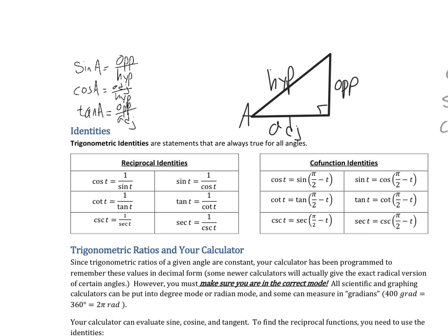We've also defined our three co-functions: cosecant, secant, and cotangent. They're just the reciprocal of sine, cosine, and tangent. Sine flipped around becomes cosecant, cosine flipped around becomes secant, tangent flipped around becomes cotangent.